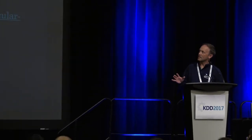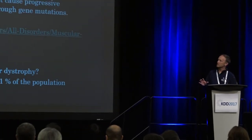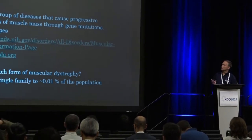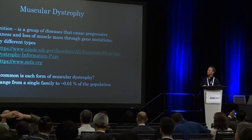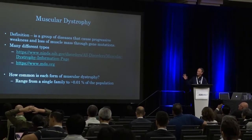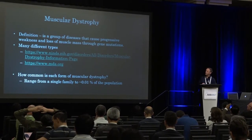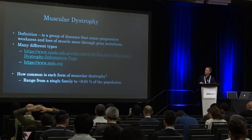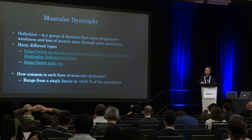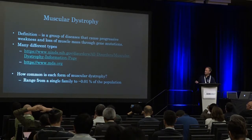I'm going to tell you a story about a form of muscular dystrophy that we've been studying for about the last 15 years. Muscular dystrophy is a name that covers a broad range of diseases. The definition is progressive weakness or loss of muscle through gene mutations. There's a whole host of different mutations that cause muscular dystrophy. The Muscular Dystrophy Association and the National Institutes of Health both have great websites describing it.